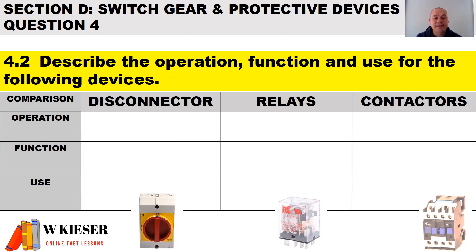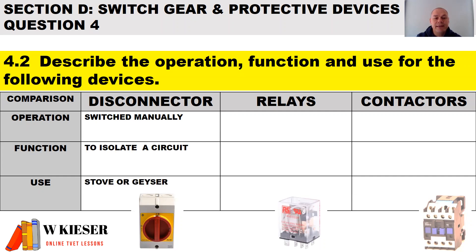For a disconnector, the operation is switched manually. Its function is to isolate a circuit, and it is mainly used for stoves or geysers.